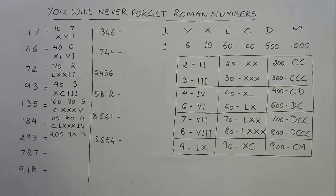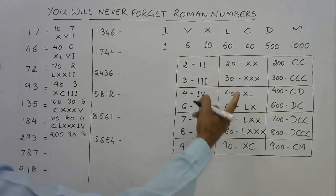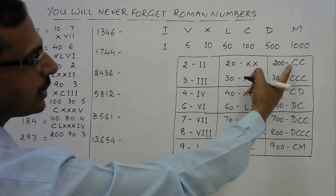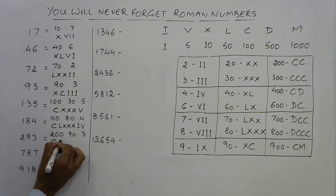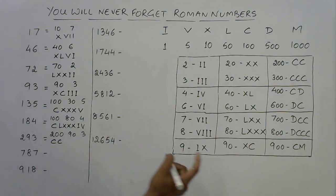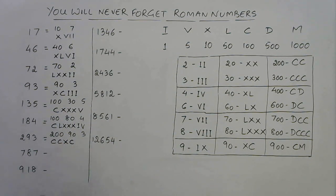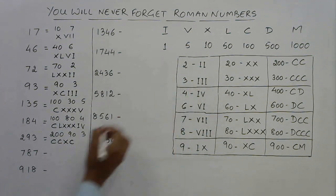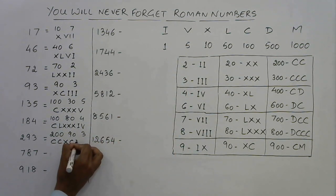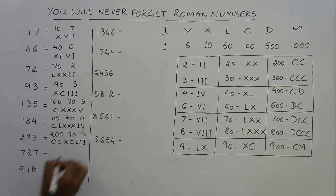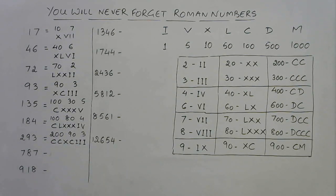For 293: 200 is CC, 90 is XC, and 3 is III, so 293 is CCXCIII.